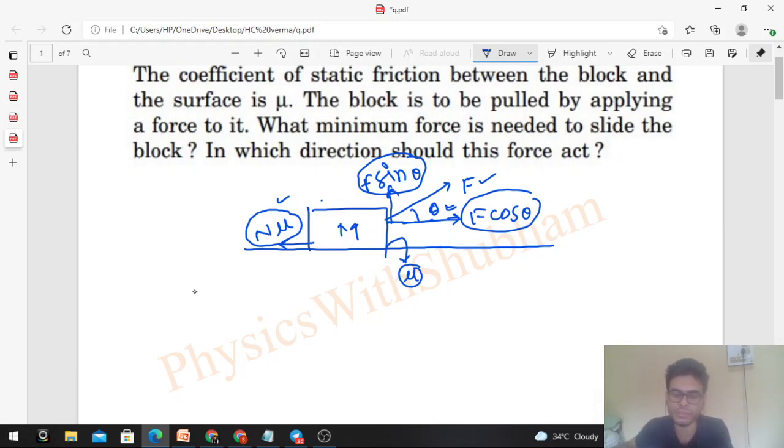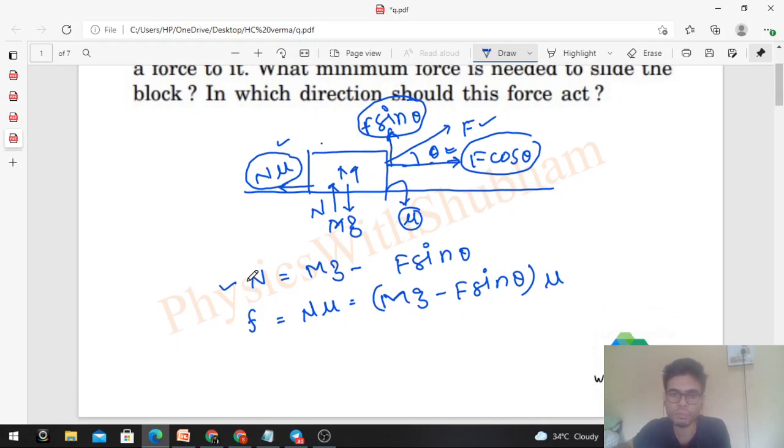Let's say F is applied at some angle. F cos θ horizontal and F sin θ vertical. Now mg acts downward and normal reaction acts upward. What will be the value of normal? That will be equal to mg minus F sin θ. The force we have to overcome is the friction force. Limiting friction will be N times μ, which equals (mg minus F sin θ) times μ.